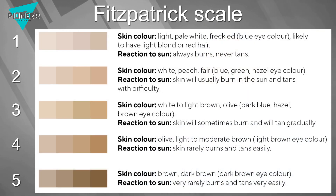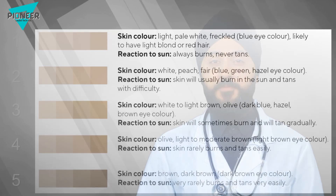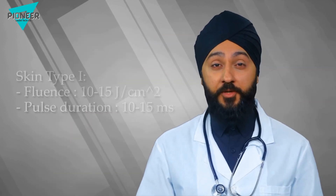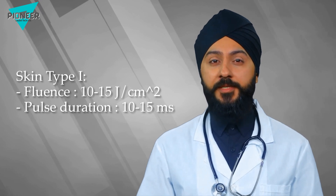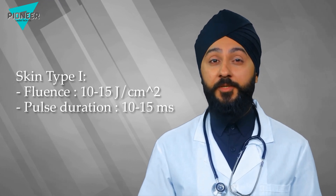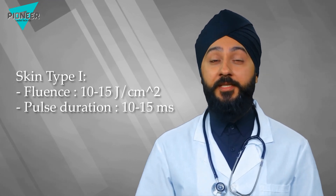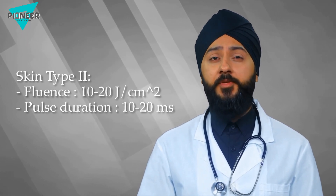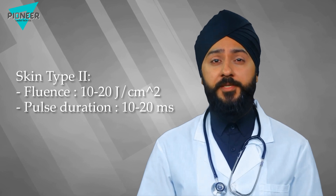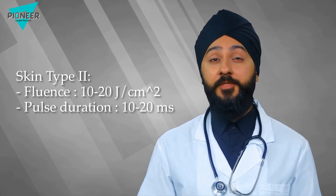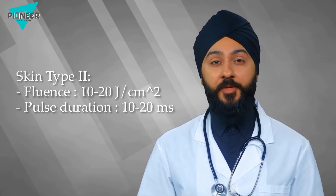Type 1 is the brightest. For skin type 1, we usually set the diode fluence to 10 to 15 joules per centimeter square, with a pulse duration set to 10 to 15 milliseconds. For skin type 2, we set the diode fluence to 10 to 20 joules per centimeter square, with a pulse duration set to 10 to 20 milliseconds, which is slightly higher than what we set for skin type 1.